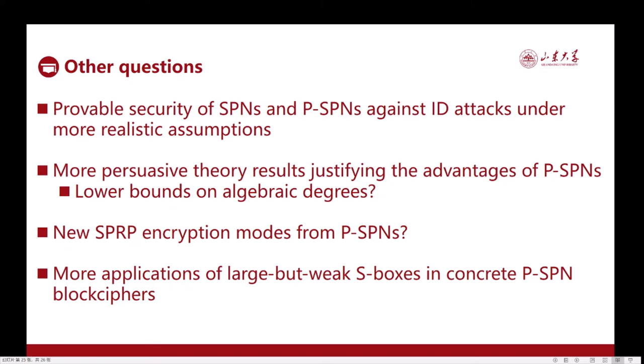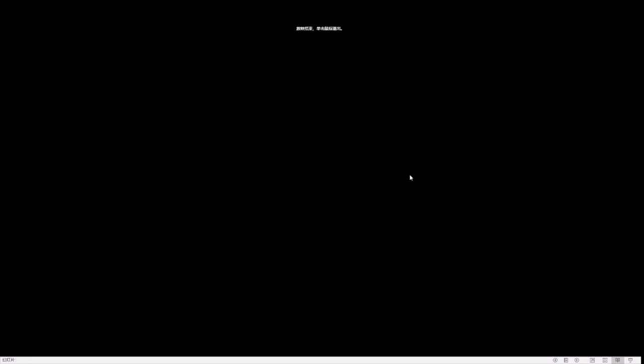Though we believe the most interesting point is to seek for more persuasive theory results justifying or dismissing the advantages of PSPNs. We proved the advantages in the SPRP model, but the model is much debatable. For example, what about algebraic degrees? Can the lower bounds on the degrees justify the advantages? We hope our work could incur more such investigations. Thank you for listening, and of course, comments are welcome.